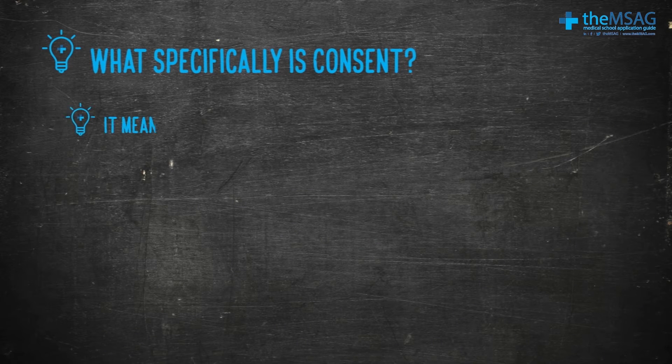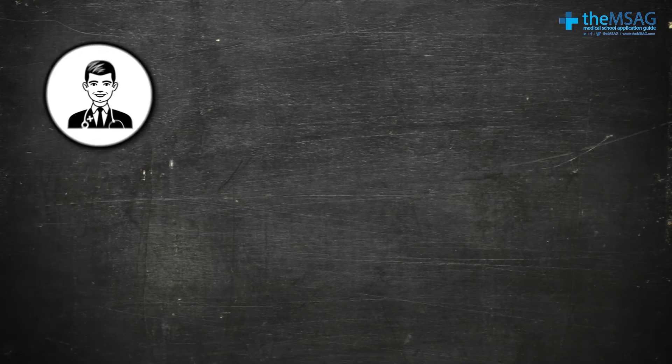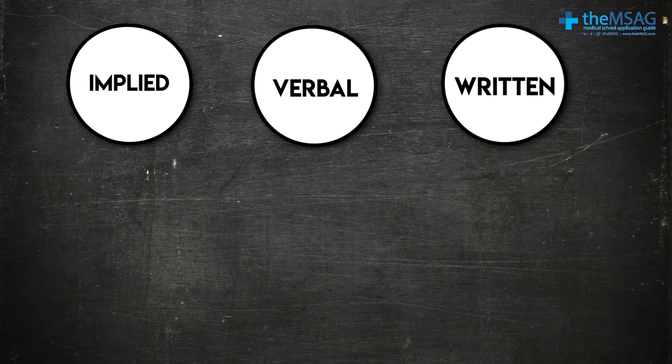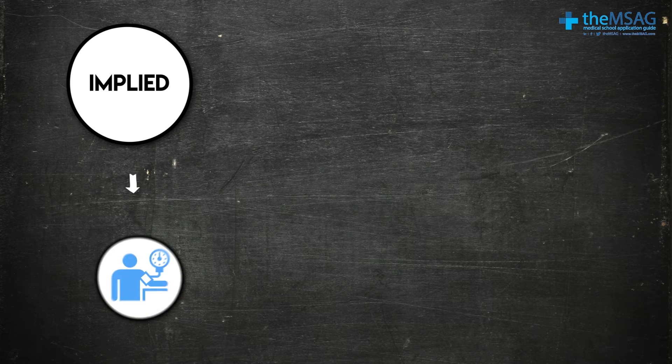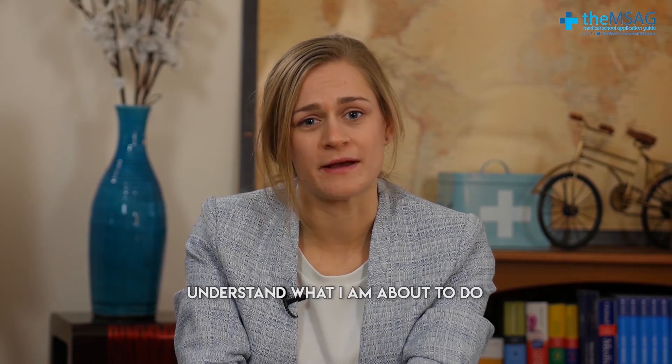We've gotten to our final C: consent. We've just mentioned that you need capacity in order to give consent, but what specifically is consent? It means giving permission for something to happen. In medical practice, consent should be obtained for all types of medical care delivered to the patient — this can range from something as simple as an examination of the lungs, to a complex heart operation. For this reason, we have three different types of consent: implied, verbal and written. An example of implied consent is when I pick up my blood pressure cuff and my patient offers out their arm. For other simple procedures, we often just ask the patient if it's okay — this is verbal consent. For example, I could say, 'Do you mind if I take some blood for testing?'